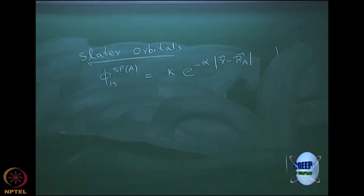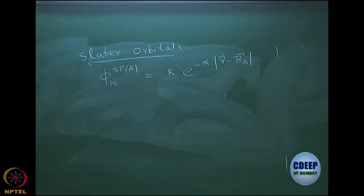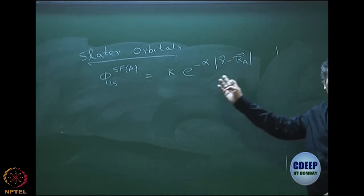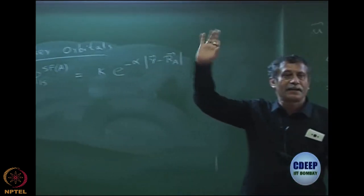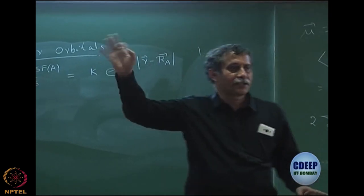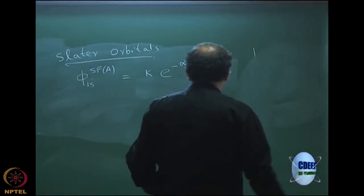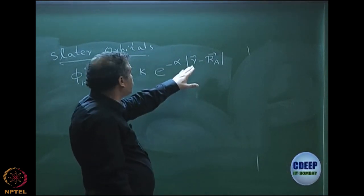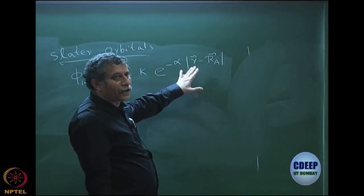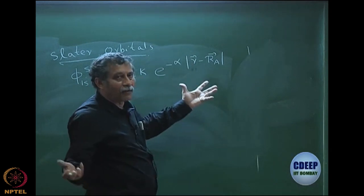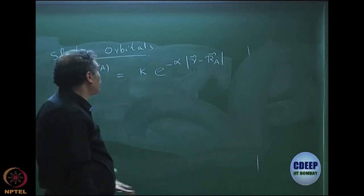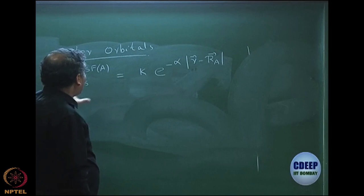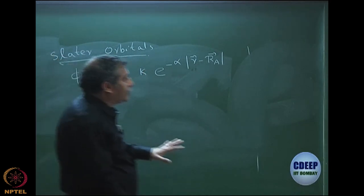This is basically some constant — I do not want to write all the details, but there are constants. If you look at the hydrogen atom it is very similar: you have exponential minus r. In general this Slater function can be written like this. I have written it in terms of a vector for generality; for the hydrogen atom you just have r as a scalar quantity, and then you can write down the integrals.